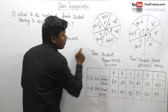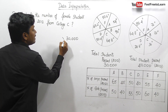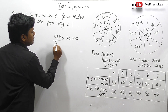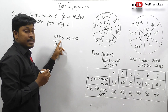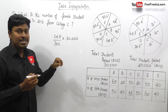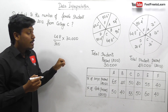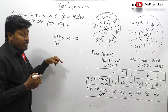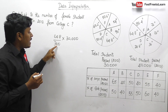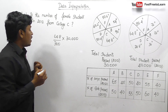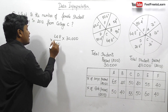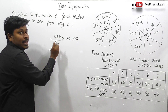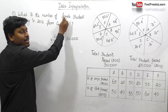College C is 64.8 degrees, so we can write this as 64.8 divided by 360. If the value were in percentage, we would divide by 100 to remove the percentage. But here all values are in degrees, so 64.8 divided by 360 gives us the total number of students in College C.